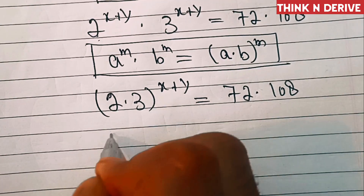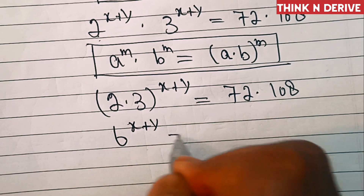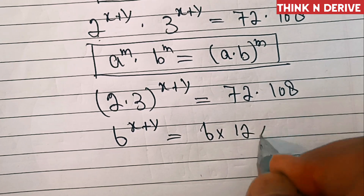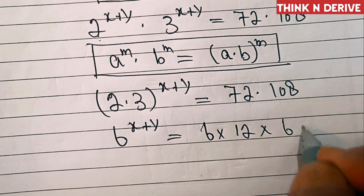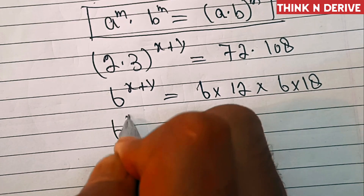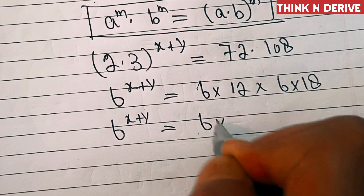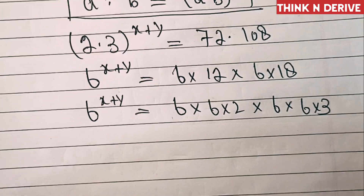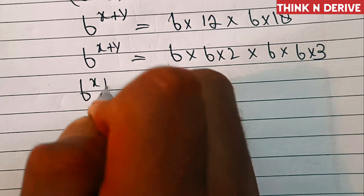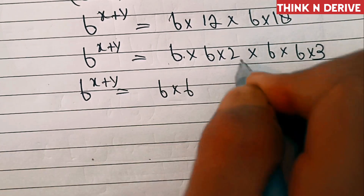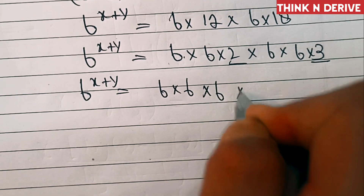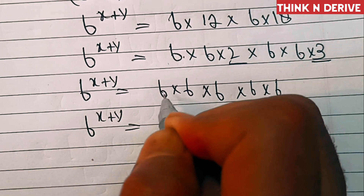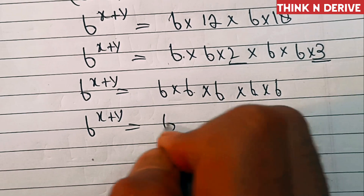That is 6 power x plus y equal to 72 into 108. Now we expand the right hand side: 72 is 6 into 12, and 108 is 6 into 18. Further, 12 is 6 into 2 and 18 is 6 into 3. So the right hand side becomes 6 into 6 into 2 into 6 into 3, which is 6 into 6 into 6 into 6 into 6. Counting these, there are 5 sixes, so this equals 6 power 5.